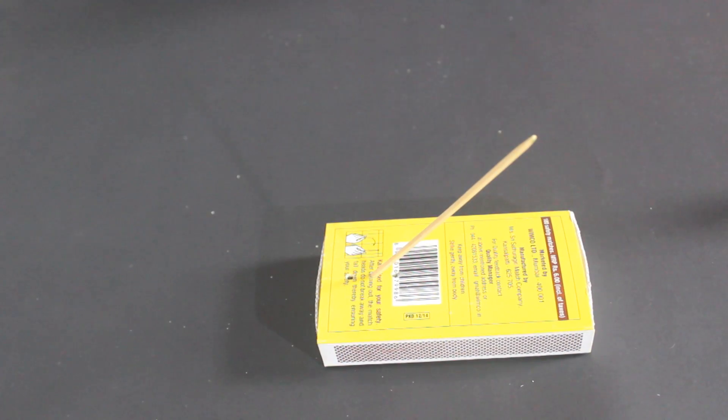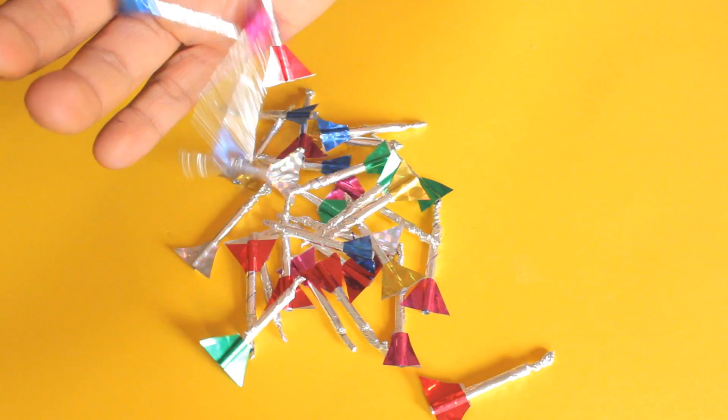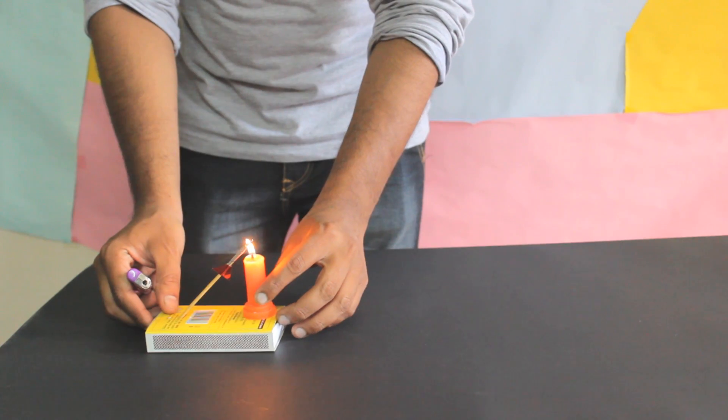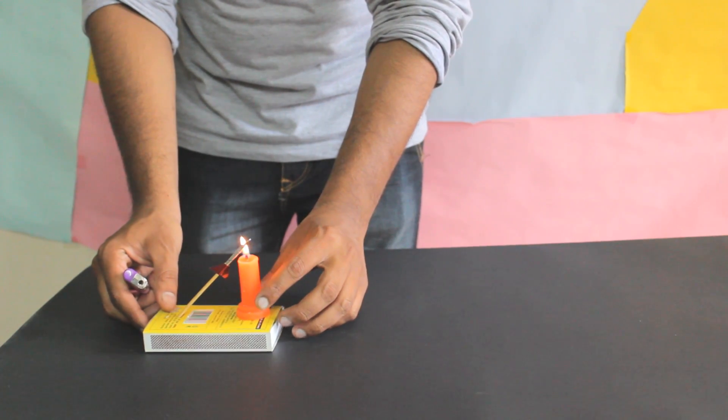Place it in one of the three holes and our launcher is ready. Now it's time for testing. Be careful. Don't point at anyone. Ignite the head portion of the rocket with a lighter or a candle.